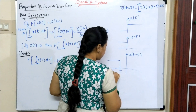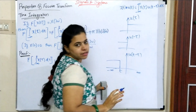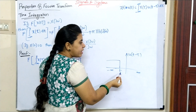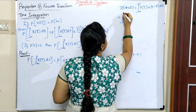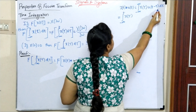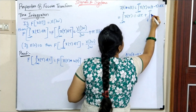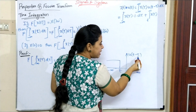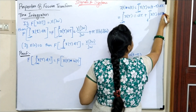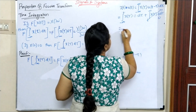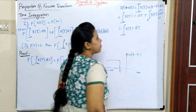From minus infinity to t, u(t−τ) has the value 1, and from t to infinity the value is 0. So from minus infinity to t, x(τ)·1·dτ gives us the integral, and from t to infinity, x(τ)·0·dτ equals zero. Therefore x(t)*u(t) equals the integral from minus infinity to t of x(τ)dτ.